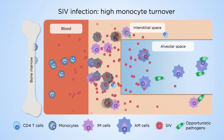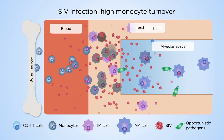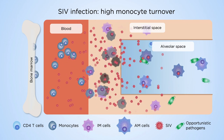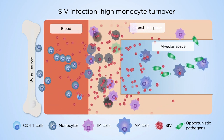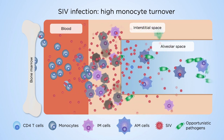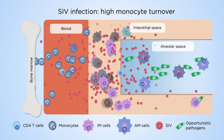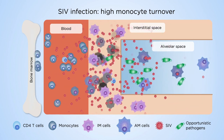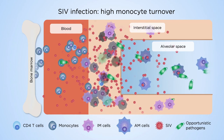Infection of interstitial macrophages and alveolar macrophages continues with AIDS disease progression. Infection and death of interstitial macrophages correlates with disease progression. Conversely, alveolar macrophages become infected but don't die or undergo increased turnover.